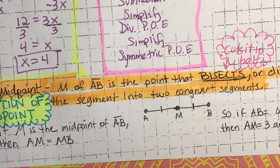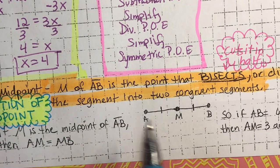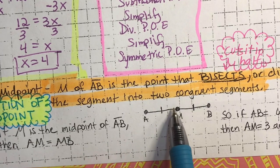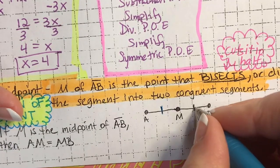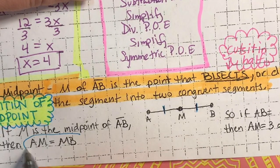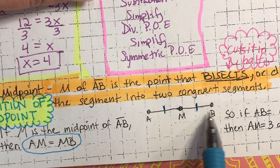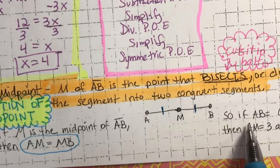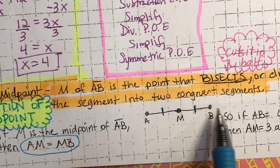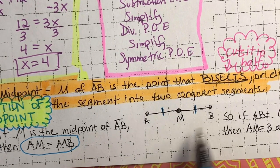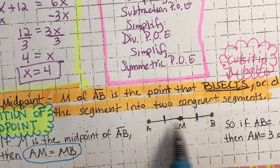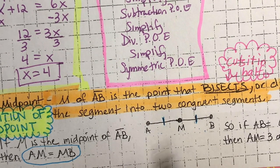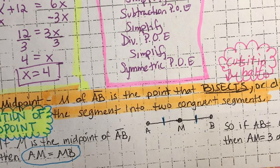So this states: if M is the midpoint of AB, then it cuts it in half, which means we put a tick mark on each half. The formula is AM equals MB. If AB is 6, it cuts it in half, so this distance equals that distance. AM is 3 and MB is 3. Three plus three is six. That is the definition of a midpoint.